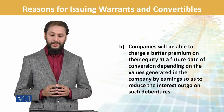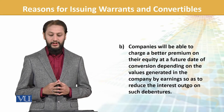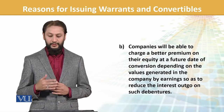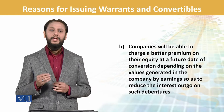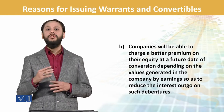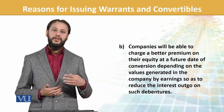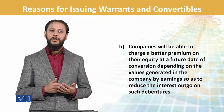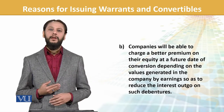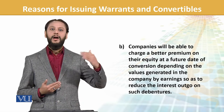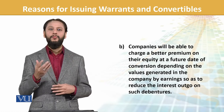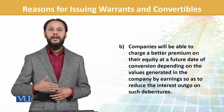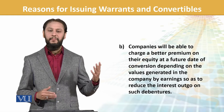Companies will be able to charge a better premium on their equity at a future date of conversion depending on value generated by the company's earnings, so it can reduce interest outgo. Meaning, right now our share value is not that great, but we know our projects are good and future prospects are good. So we can issue a convertible or warrant instrument and at a later stage issue shares to fetch a higher price or achieve higher market movement, which is not possible at current pricing.